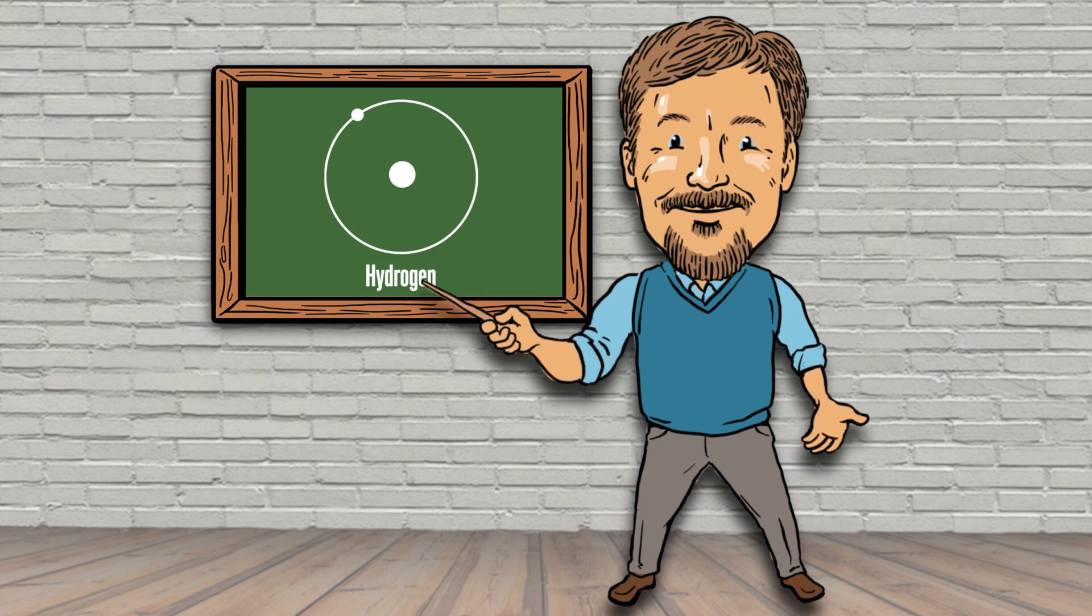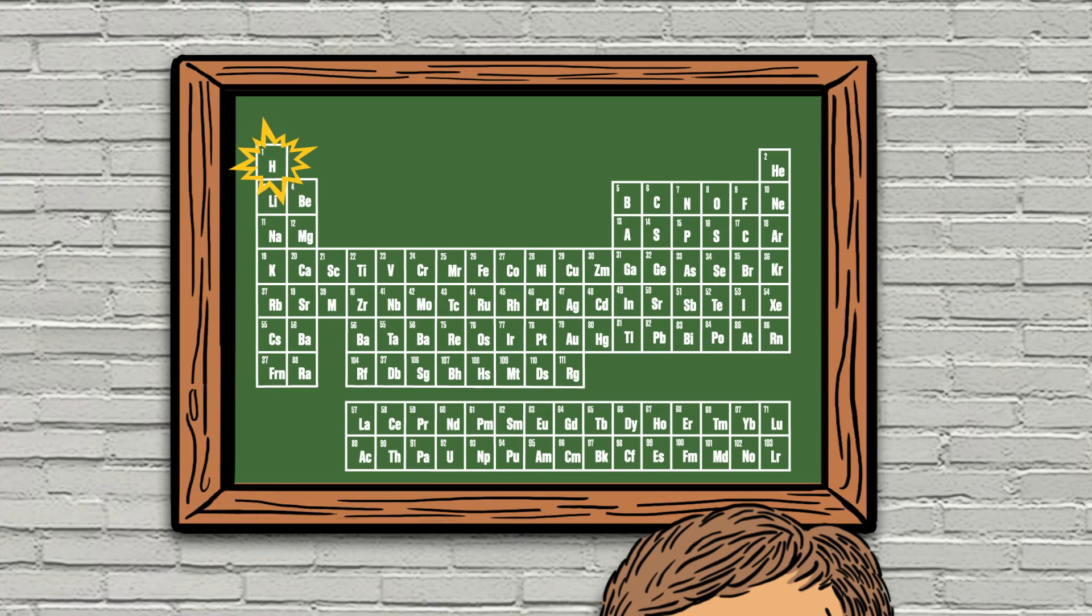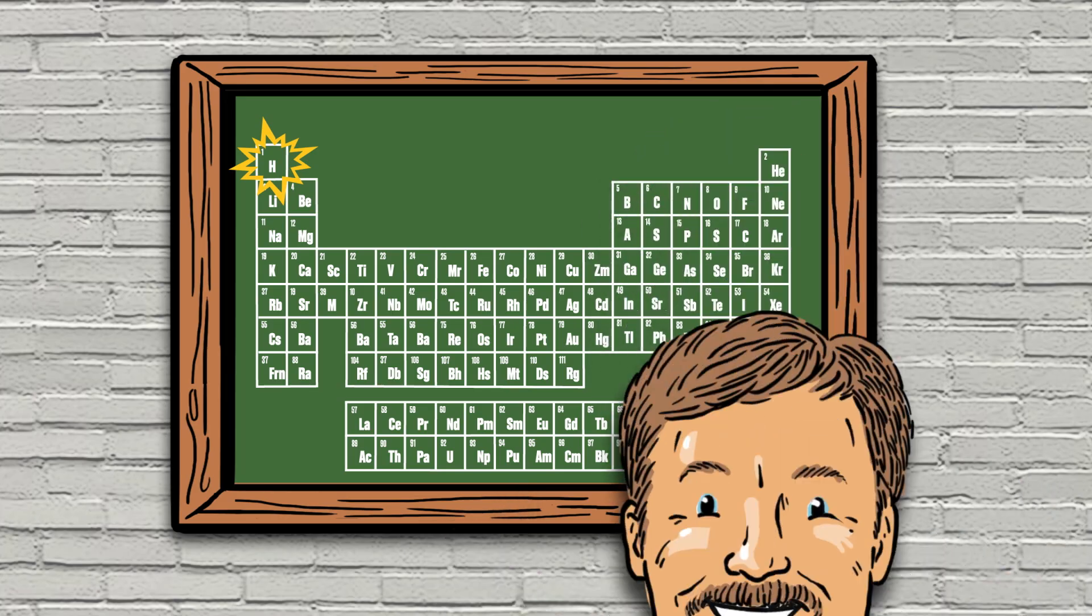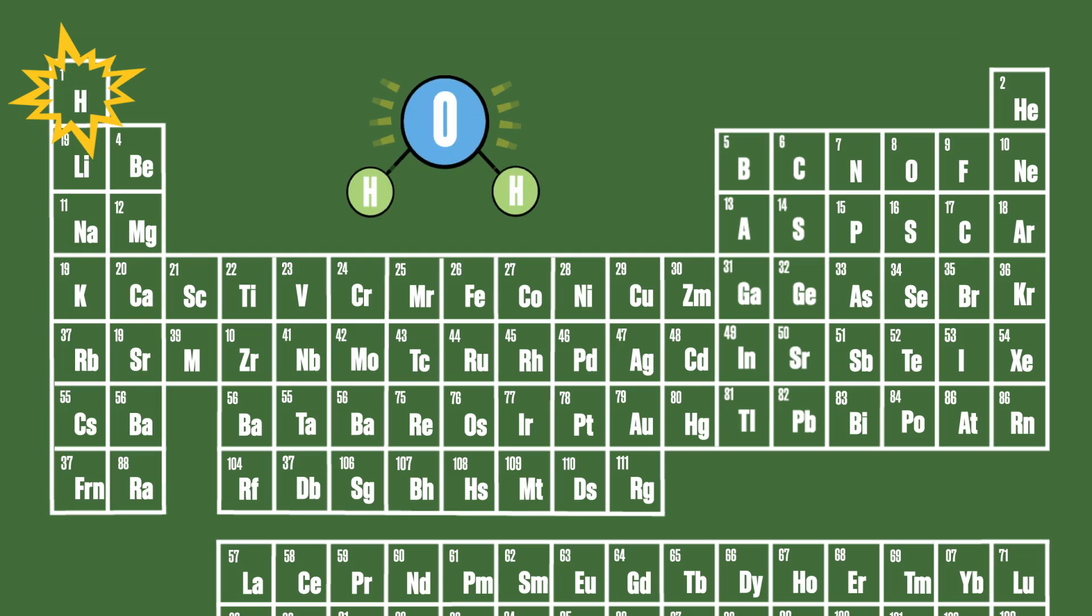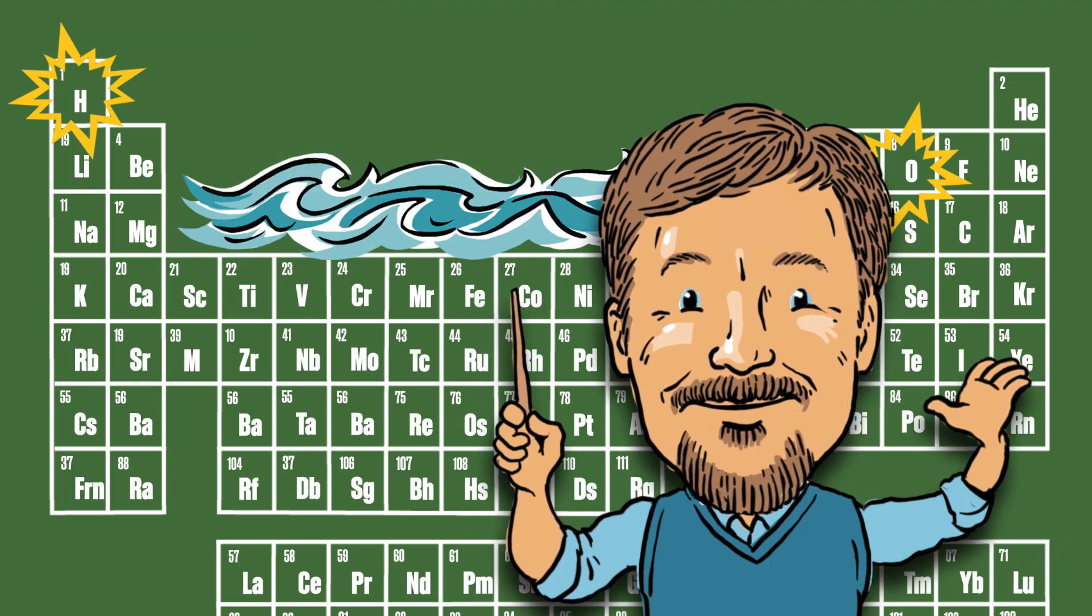You've heard a lot about hydrogen. You remember it sits at the top left of the periodic table, the most abundant element in the universe. Well, here on Earth, it's typically found with other elements. Hydrogen and oxygen form a familiar substance we all know: water.